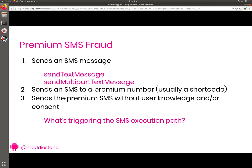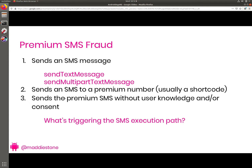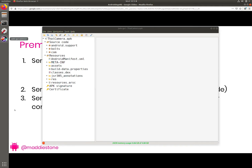So that's a good place to start — looking for any method calls to those, or strings like that. The next thing you'll look for is sending an SMS to a premium number. I generally find this is easier to look for based on either strings or finding one of the API calls first. Another thing to keep in mind is that once you find an execution path, you may want to look for what's triggering it, but we're not quite there yet.